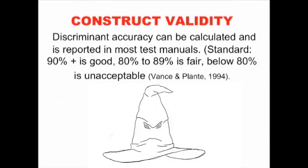We try to pretend that our tests are like sorting hats in the Harry Potter movie — you put it on a child's head and it says, hey, this one has a disability, or this child is a Gryffindor, they don't have a disability. We don't have a sorting hat, and we likely will not get one for a very long time.